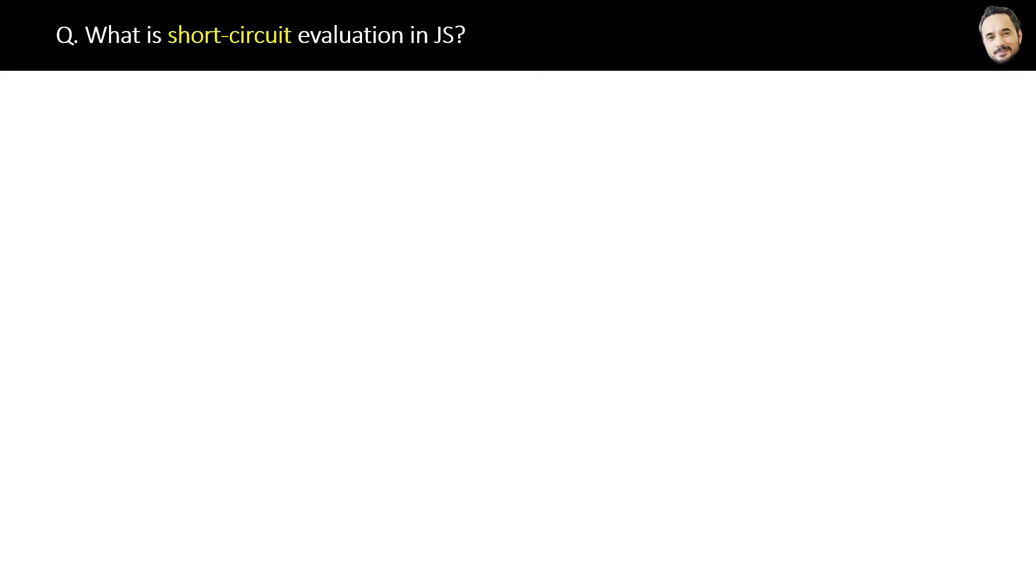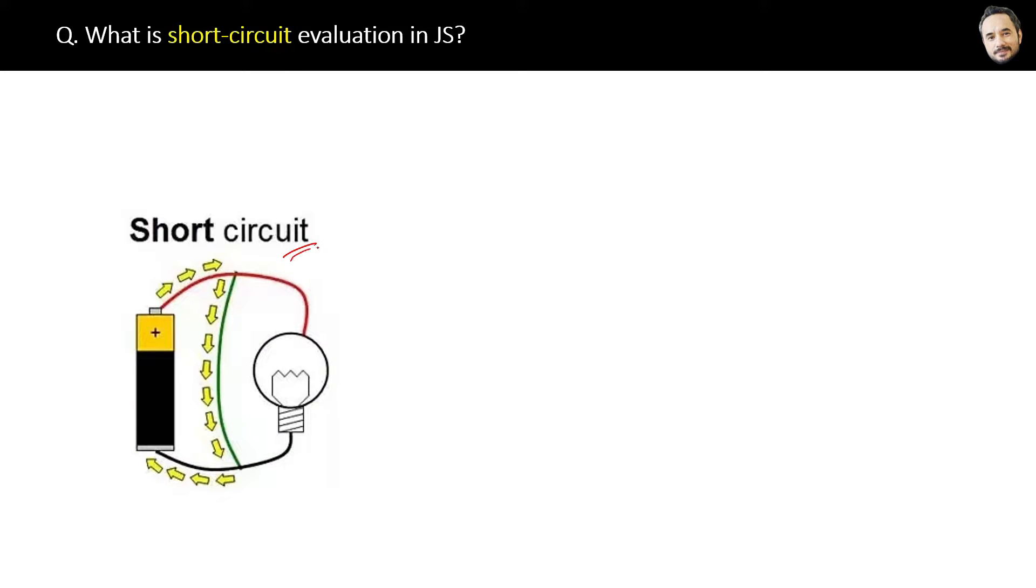What is short circuit evaluation in JavaScript? The term short circuit comes from electricity. You know we light a bulb by a cell, something short circuiting. And then if we connect the plus and minus directly before the bulb like this, then a short circuit will happen because the electricity will take the shortest available path to complete the circuit.